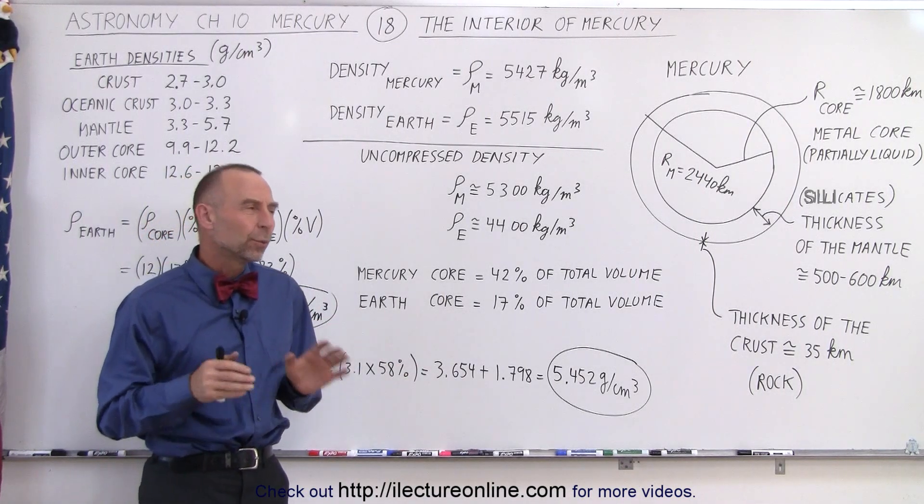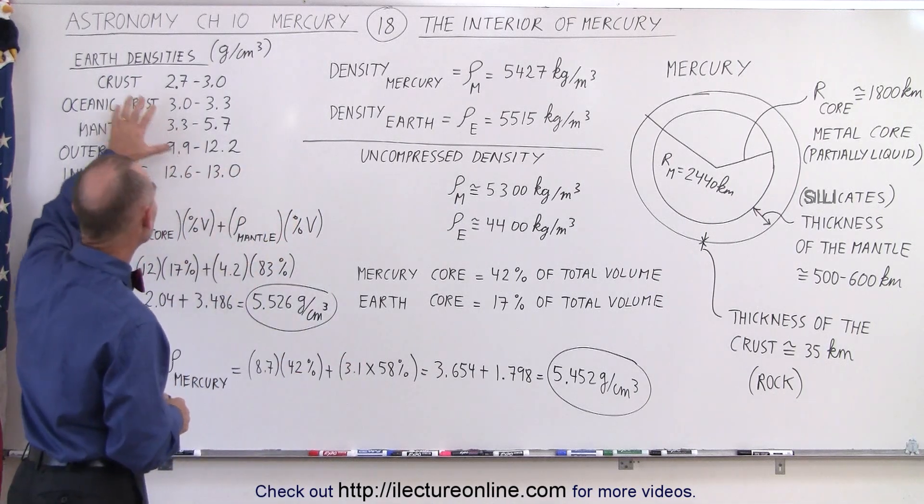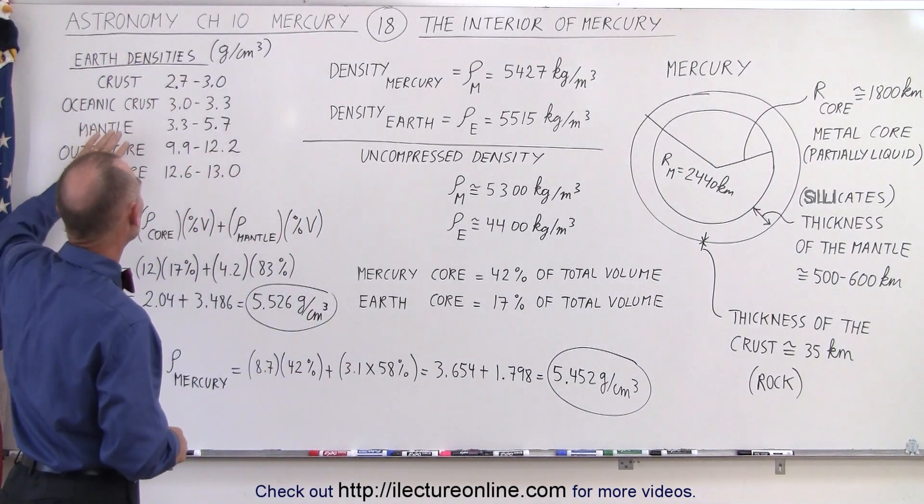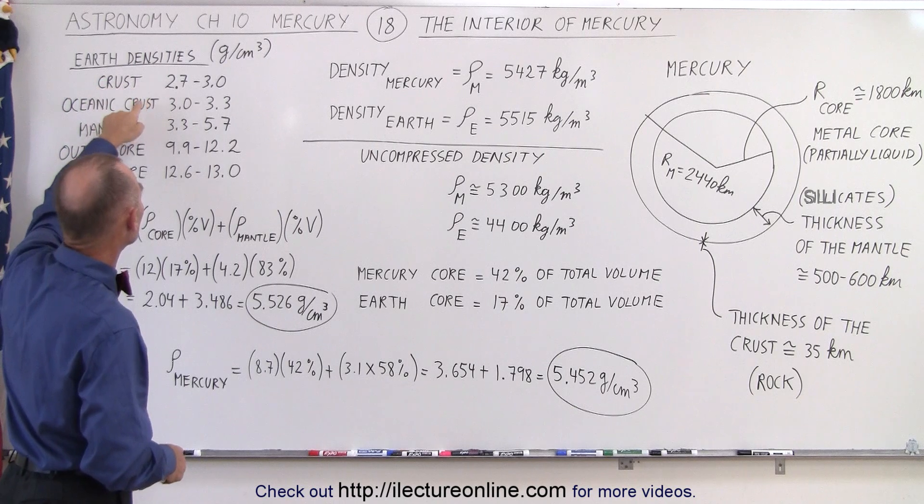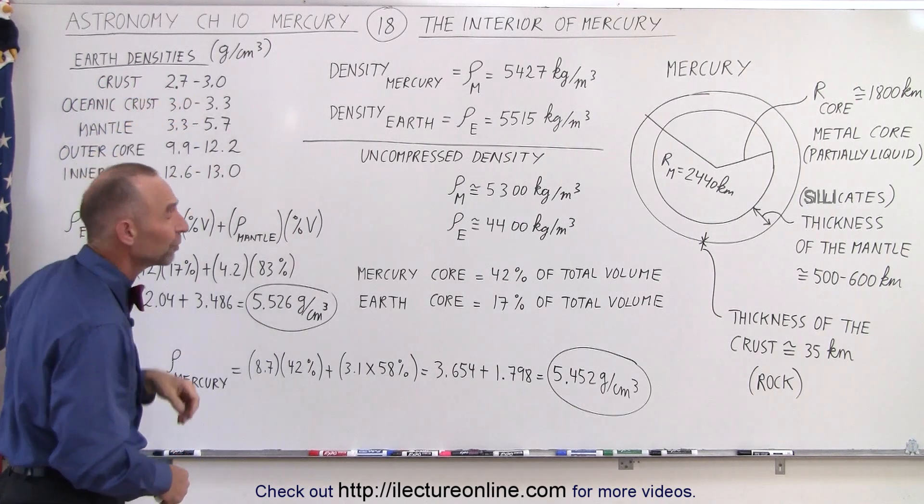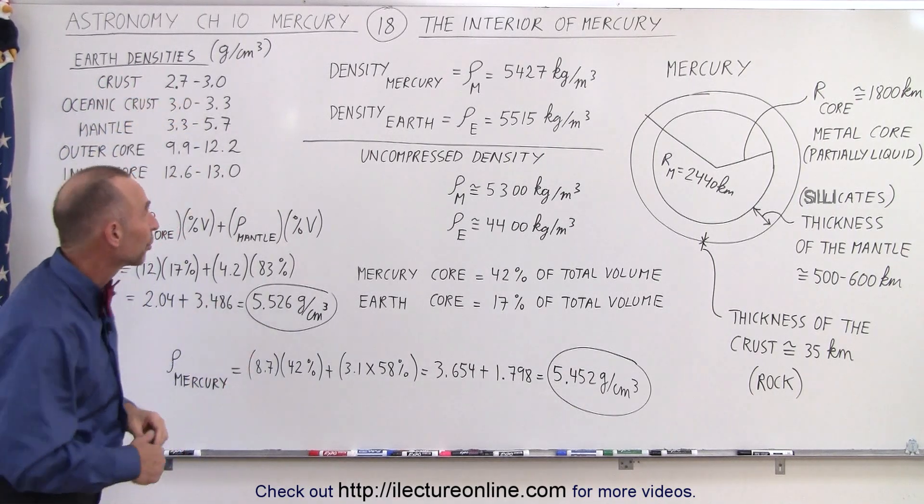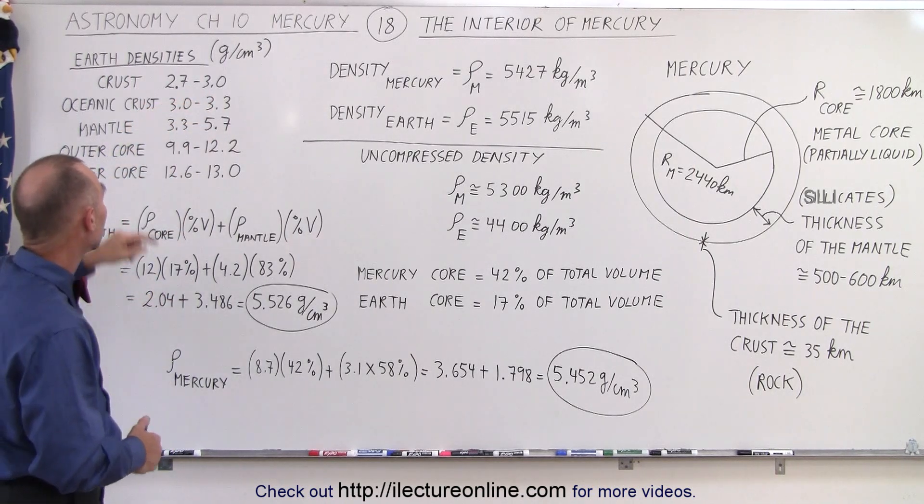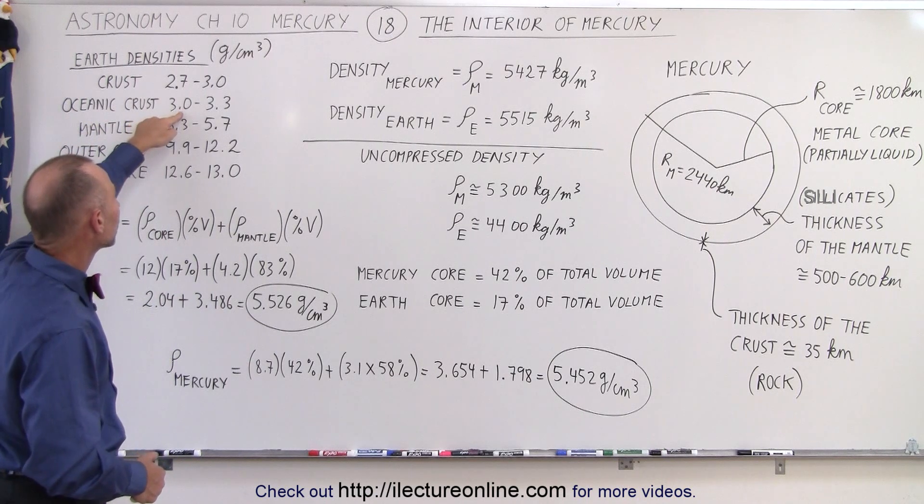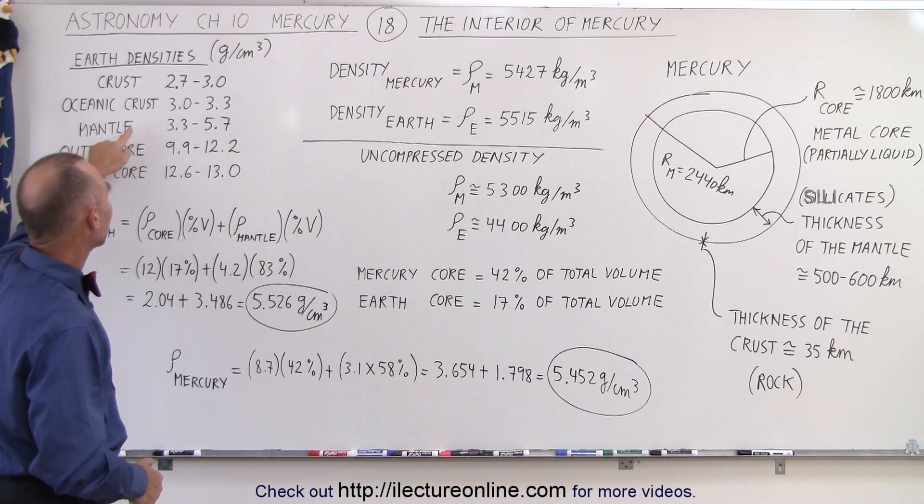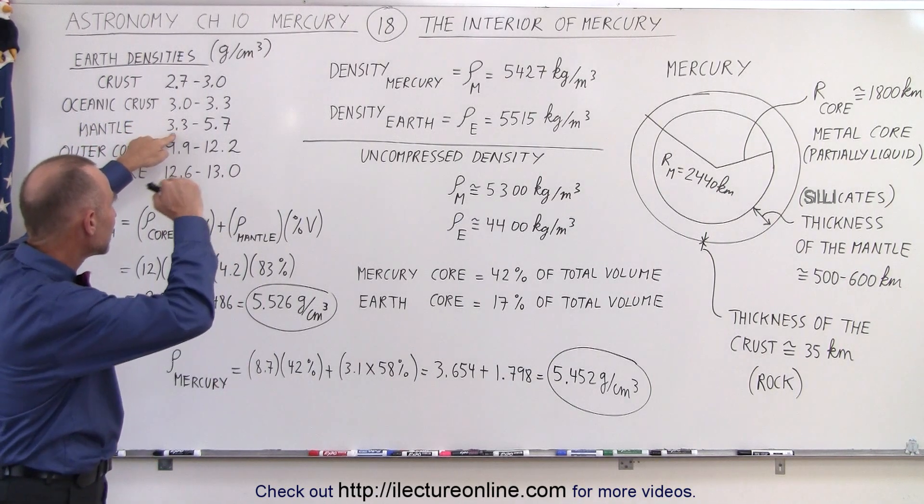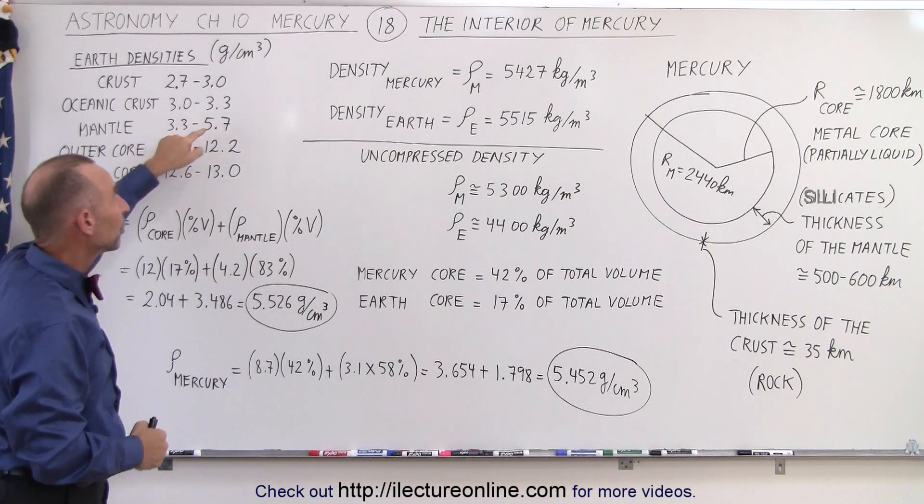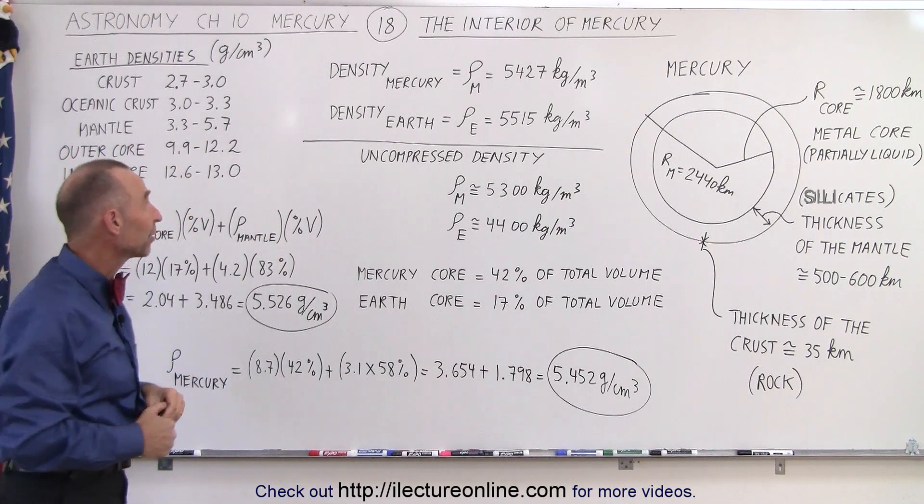How do we know that? Well, if we go back to understanding what the interior of the Earth looks like, we realize that the densities of the Earth for the crust is about 2.7 to 3 grams per cubic centimeter, which is 2700 to 3000 kilograms per cubic meter. The oceanic crust is a little bit more dense. The mantle varies from 3.3 near the upper part to down to about 5.7 grams per cubic centimeter at the lower end of the mantle.